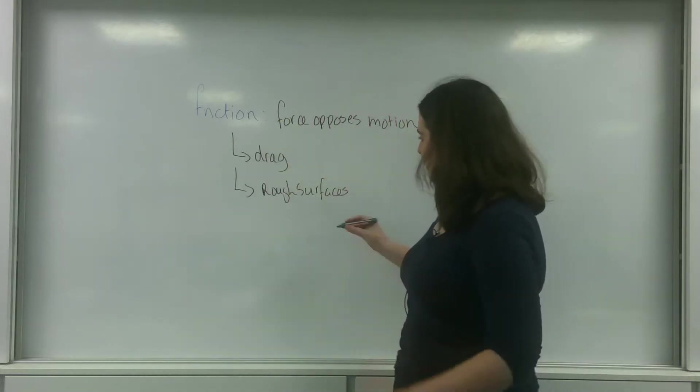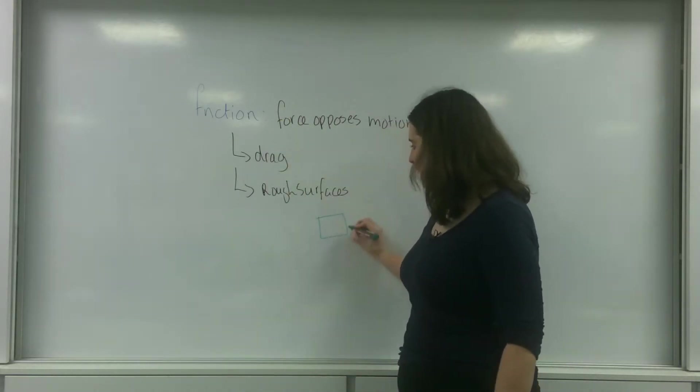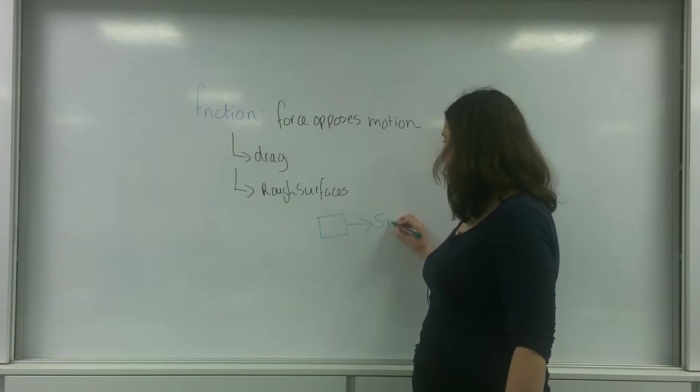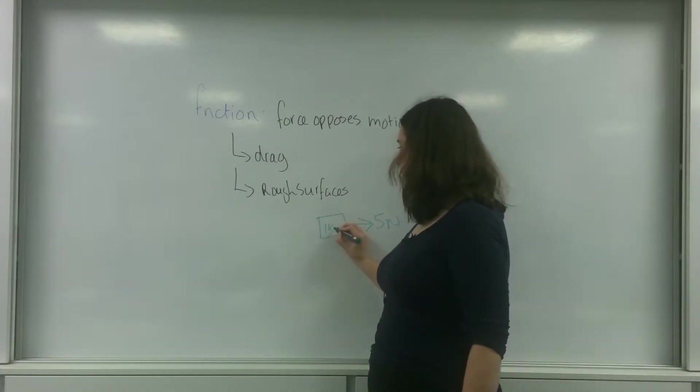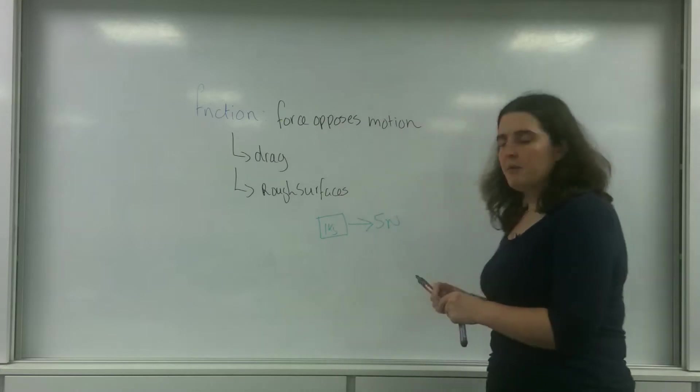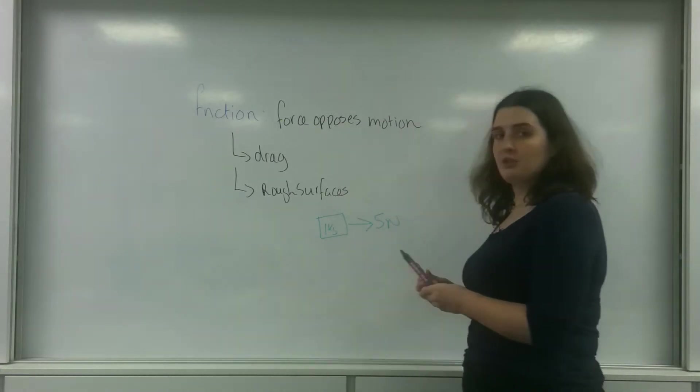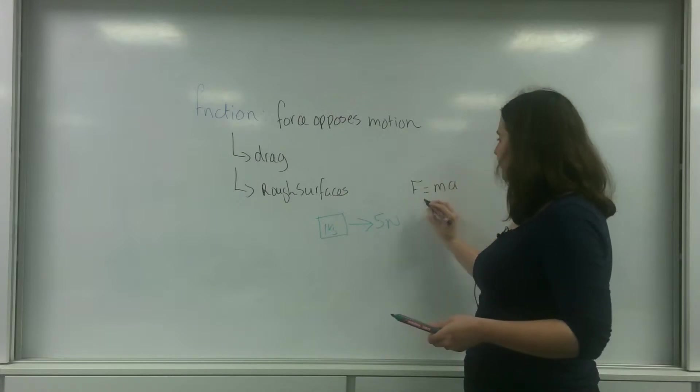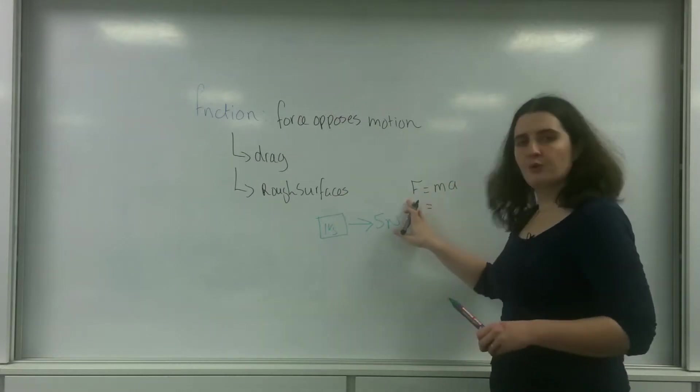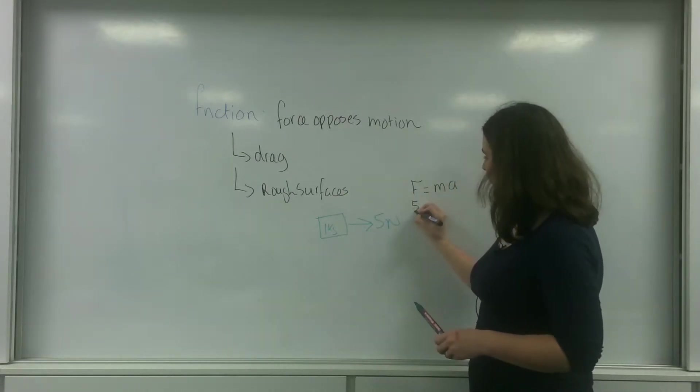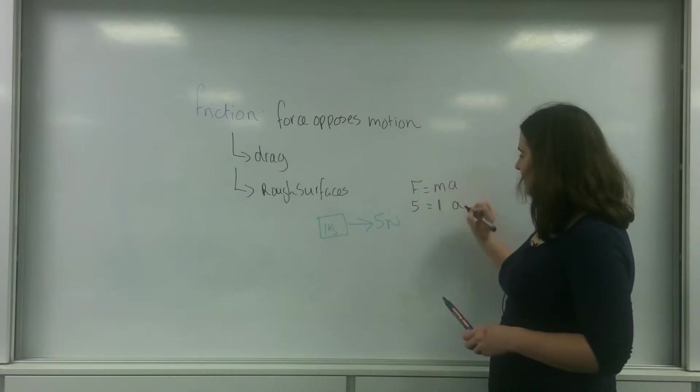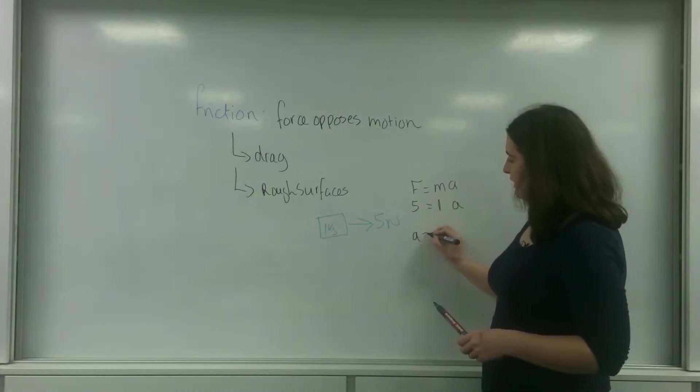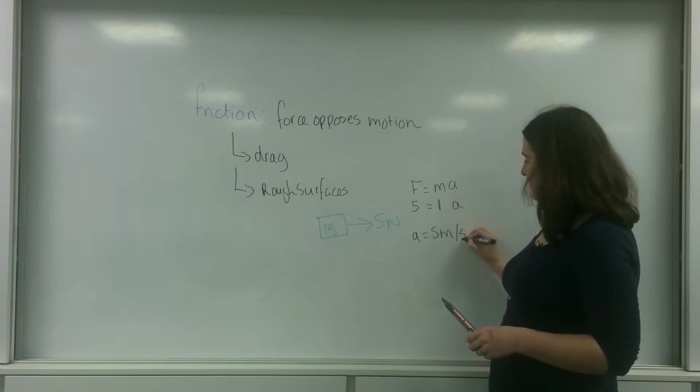So, if I had a box here, I've got my box here and it's moving this way with 5 Newtons. And it's a 1 kilogram box. My acceleration for this object, using Newton's second law, F equals MA, so the resultant force is 5. That is 1 and that is A. So A equals 5 metres per second squared.